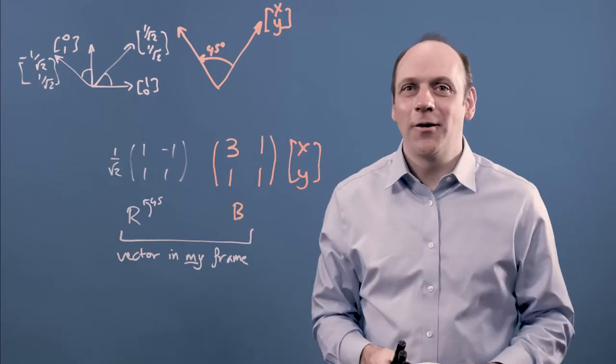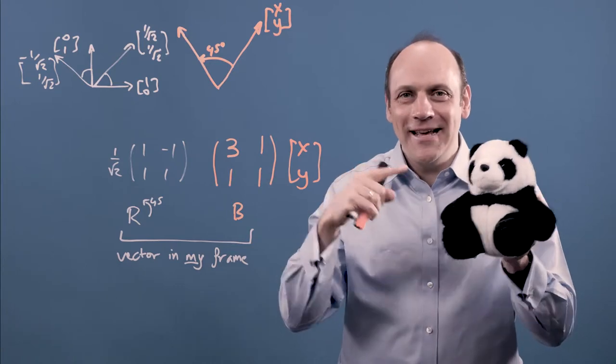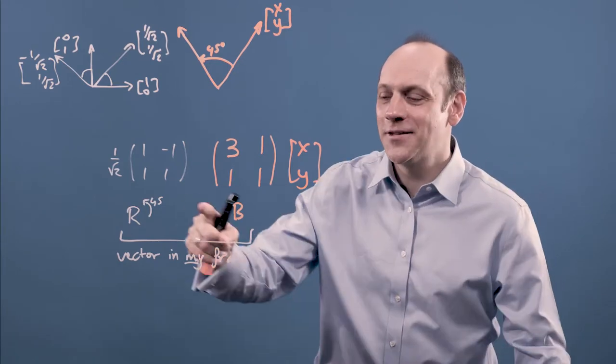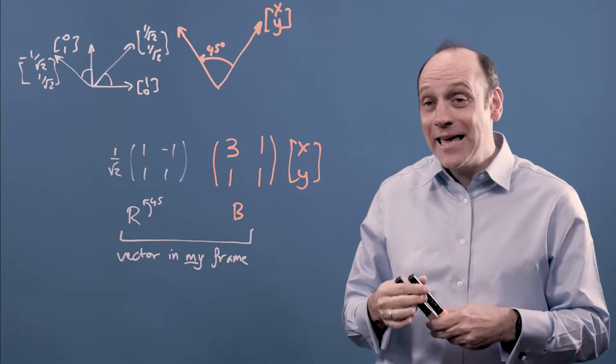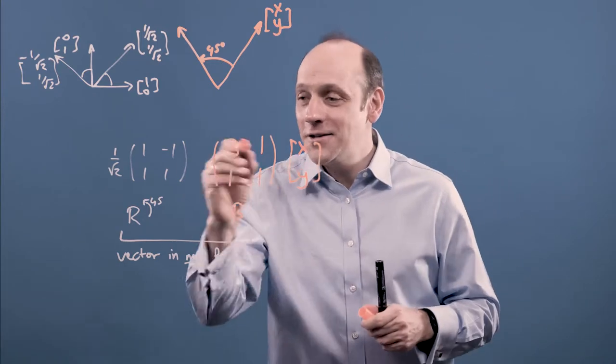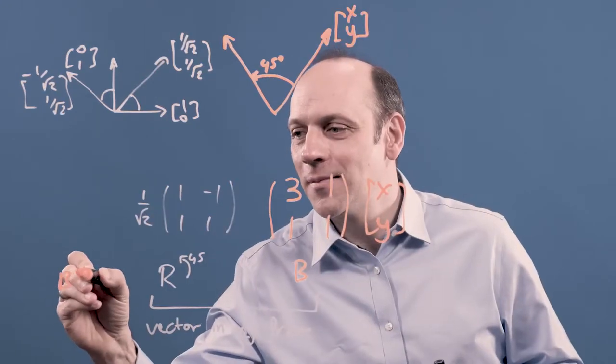the problem is Bear doesn't care about my world. He wants to get the rotation in his basis. So then I have to transform the resulting vector back into Bear's basis. And I do that by applying B to the minus 1.